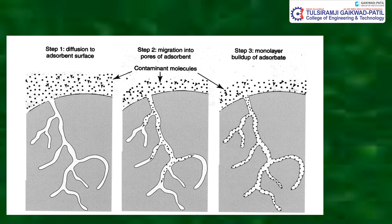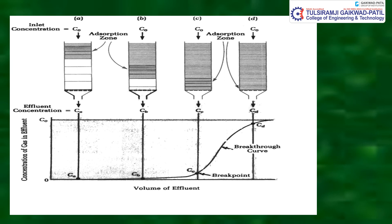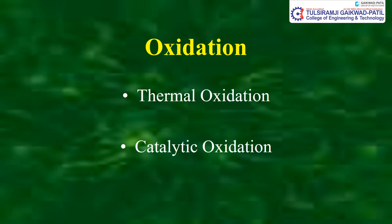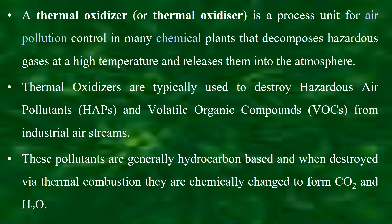Thermal oxidation is a process unit for air pollution control in many chemical plants that decomposes hazardous gases at high temperatures and releases them into the atmosphere. Thermal oxidizers are typically used to destroy hazardous air pollutants and volatile organic compounds from industrial airstreams. These pollutants are generally hydrocarbon-based and when destroyed via thermal combustion, they are chemically changed to CO2 and H2O. The operating temperature is 700 to 1300 degrees Celsius, with efficiency of 95 to 99 percent.